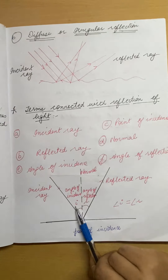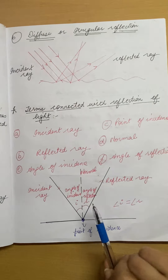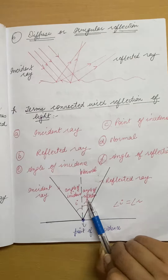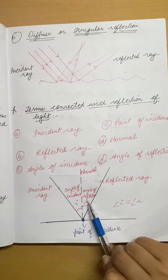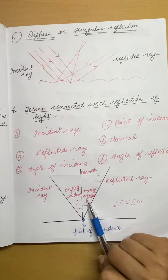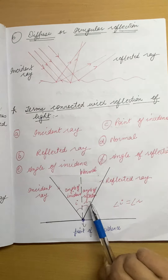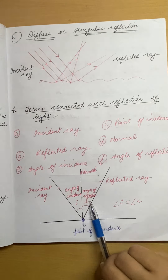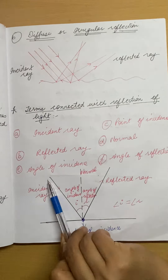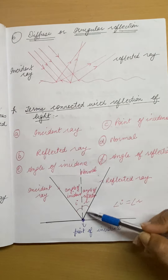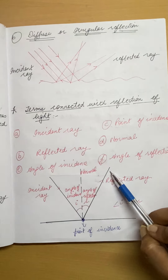Angle I is always equal to angle R. So if the angle of incidence is 40 degrees, the angle of reflection is also 40 degrees; if it is 60 degrees, it is also 60 degrees. To summarize: this is the angle of incidence, this is the angle of reflection, this is the point of incidence, this is the incident ray, this is the normal ray, and this is the reflected ray.